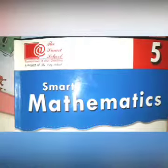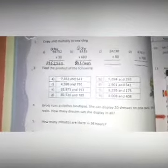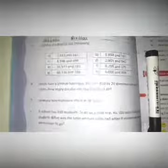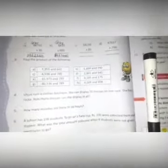Now question number 4 on page number 26. Arush runs a clothes boutique. She can display 20 dresses on one rack. She has 20 racks. How many dresses can she display in all?